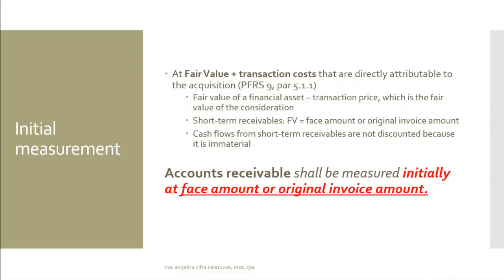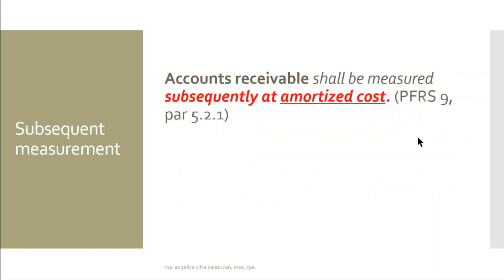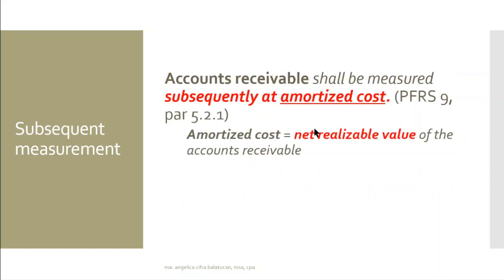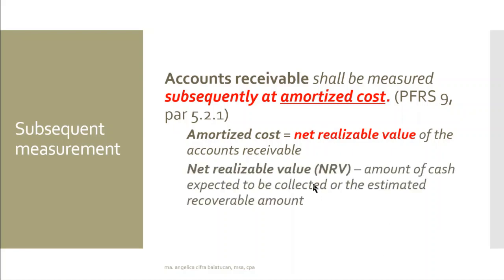So, if a customer makes a sale, it's recorded as accounts receivable. And what would be our subsequent measurement? That would be at amortized cost. The amortized cost is the net realizable value of the accounts receivable — that's the amount of cash expected to be collected, or the estimated recoverable amount.